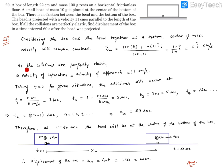Since the collisions are perfectly elastic, the velocity of separation and velocity of approach are identical because the coefficient of restitution is 1. Initially the bead was moving rightward at 11 centimeters per second and the box wall was at rest, so the relative velocity of approach was 11 centimeters per second. Since the collisions are perfectly elastic, this relative velocity of 11 centimeters per second will remain the same forever.